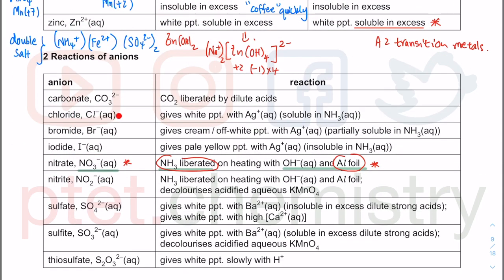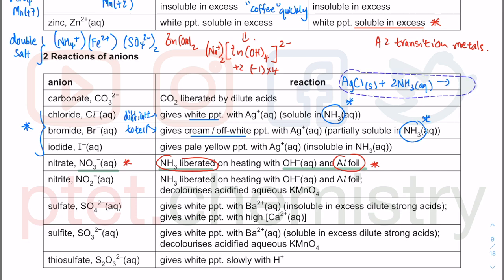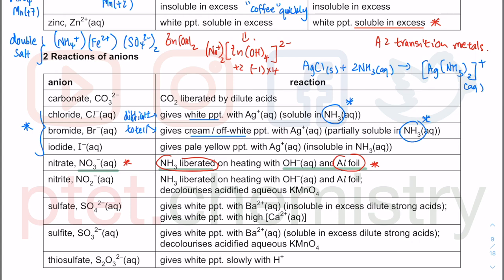For halide tests, AgCl is white, AgBr is cream, and AgI is pale yellow — AgCl and AgBr are difficult to distinguish visually. Add excess ammonia: AgCl dissolves (AgCl(s) + 2NH₃(aq) → [Ag(NH₃)₂]⁺(aq) + Cl⁻(aq)), giving a colourless solution, but AgBr does not dissolve in excess ammonia. AgI (pale yellow) is easy to identify visually.